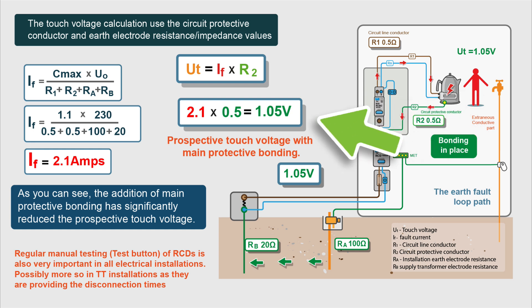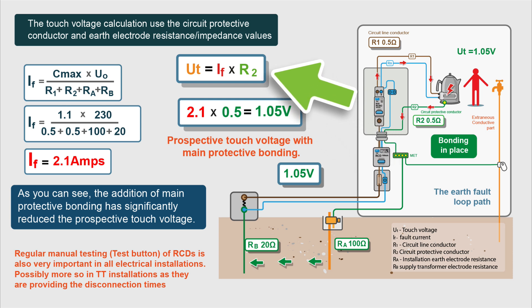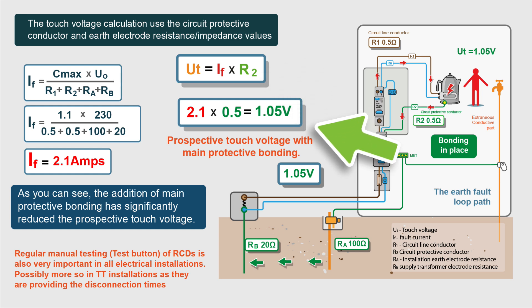Here is the calculation with our bonding in place. The formula for the fault current is still the same — we've still got 2.1 amps. But the formula for touch voltage is different. When we've got bonding in place, you'll notice the earth return path is just R2 — it doesn't include the earth electrode resistance. So we multiply the fault current by R2: 2.1 times 0.5 equals 1.05 volts. You can see that's a massive reduction in the prospective touch voltage, and it goes to show the importance of main protective bonding in TT systems. These figures are from Guidance Note 5 by the IET.